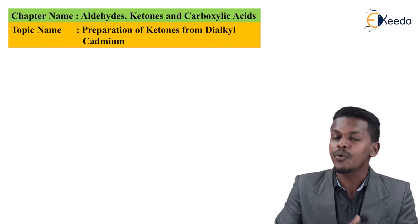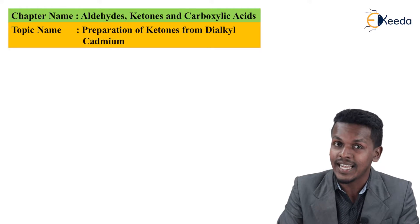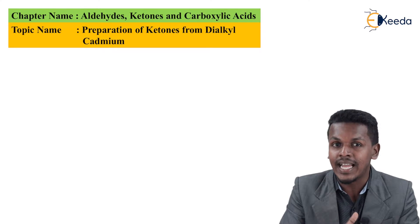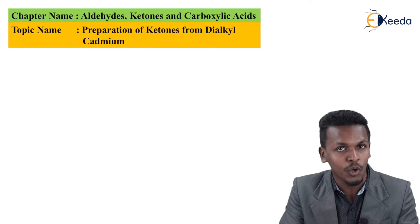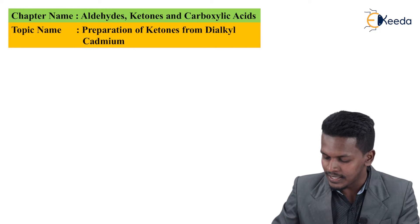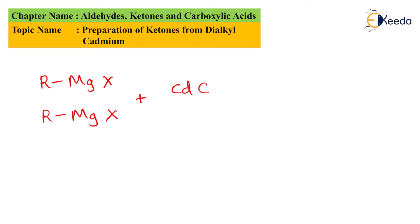Here we are going to talk about how we can prepare ketone by using dialkyl cadmium. But before that we should understand what dialkyl cadmium is and how it can be obtained. For that we can consider any Grignard reagent — here I am considering RMgX — and another molecule of RMgX, which can be easily reacted with cadmium chloride, CdCl₂.